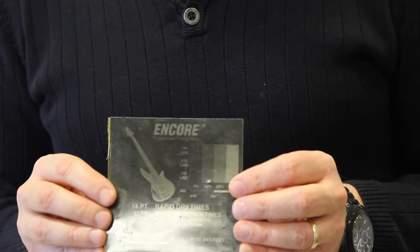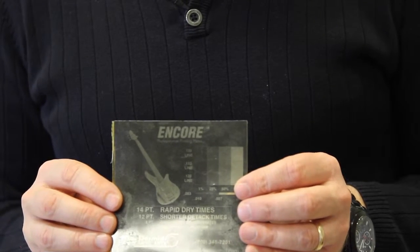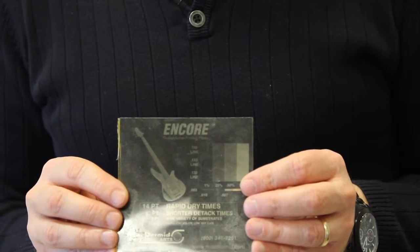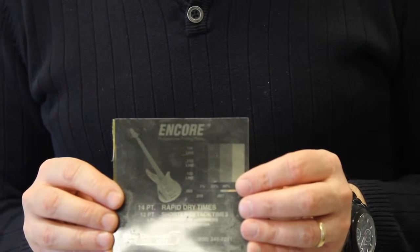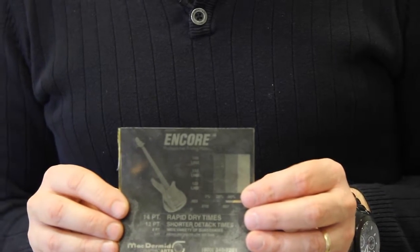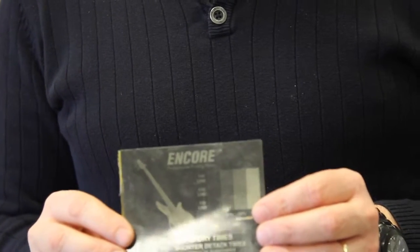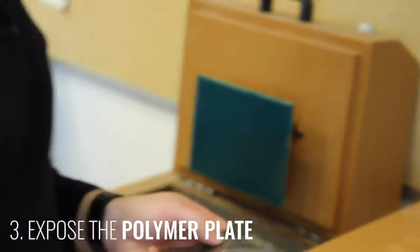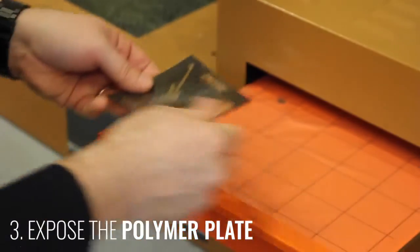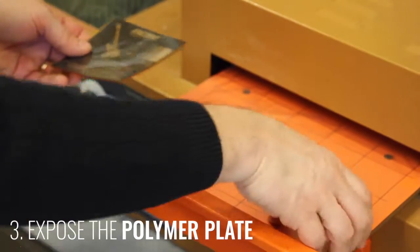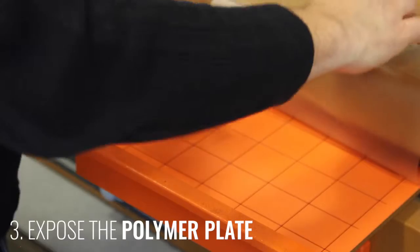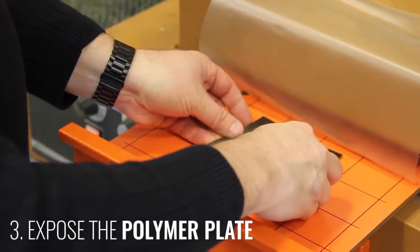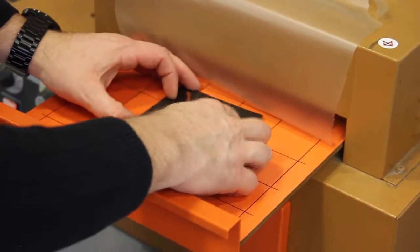That's something that the output service bureau that creates your ortho film can help you with in getting it set up properly and ready for use in our system here. So moving over to the exposing tray, what we're going to do is lift off the plastic cream material and place the polymer plate down with the ortho film on top.